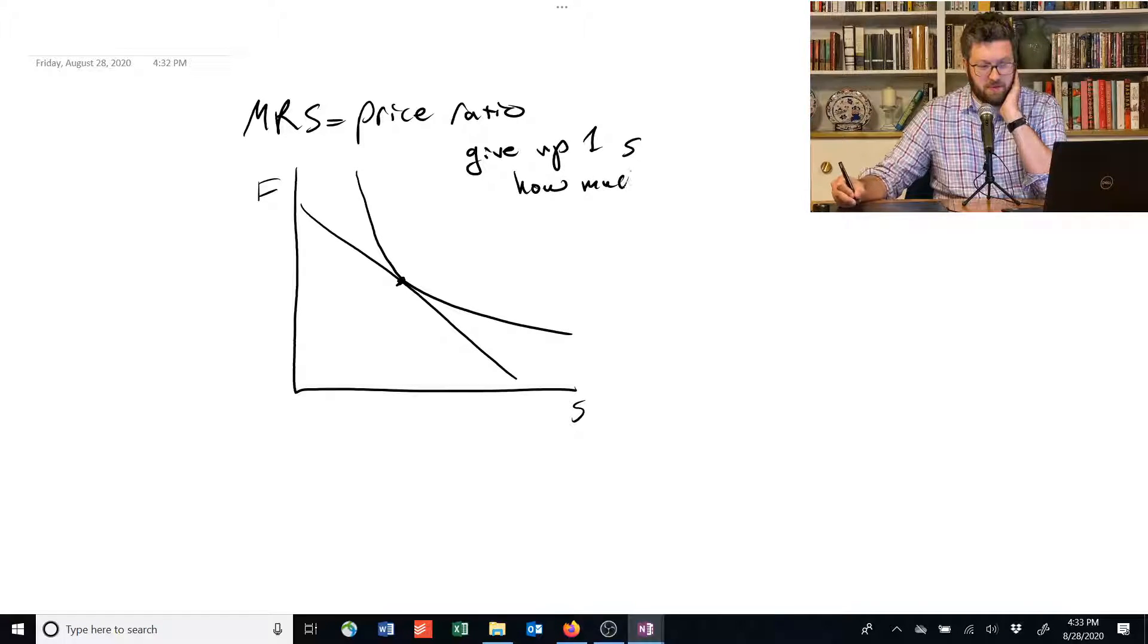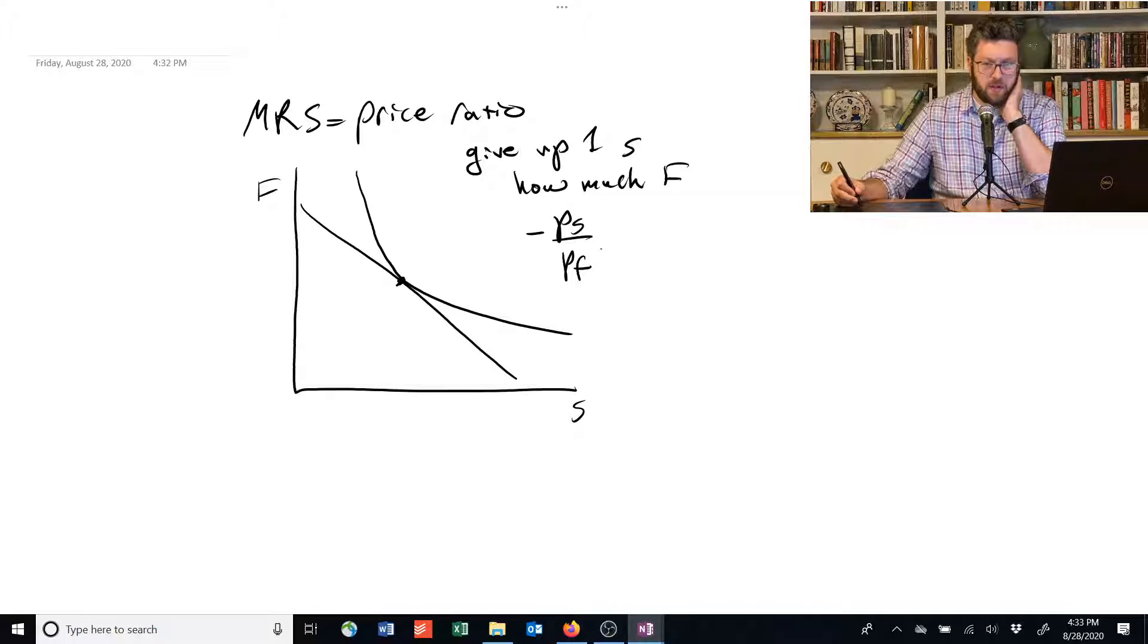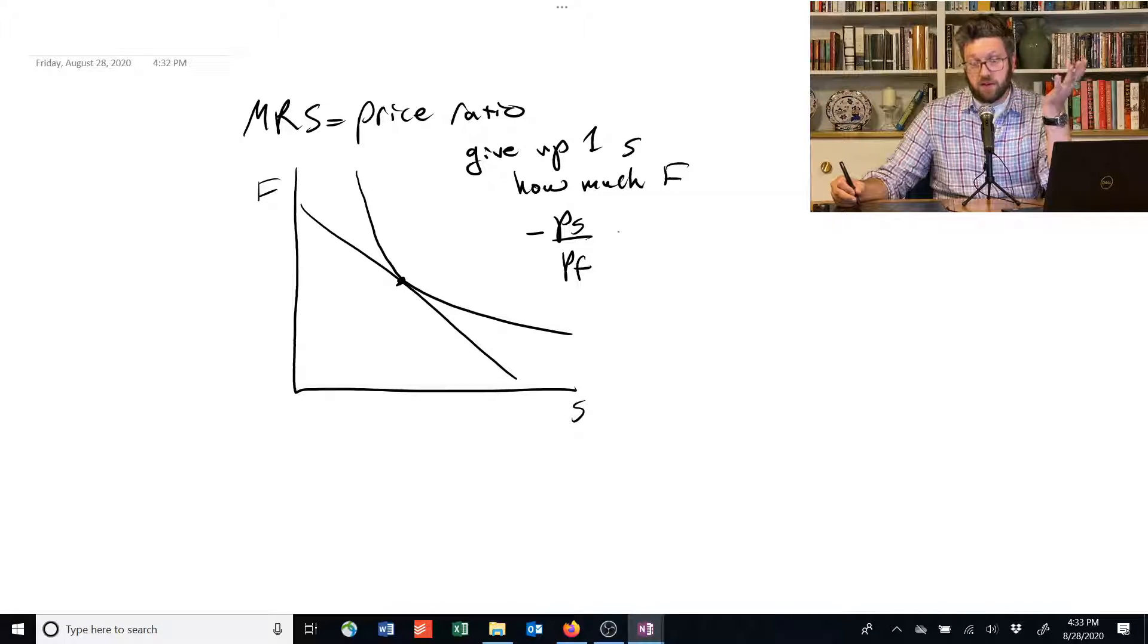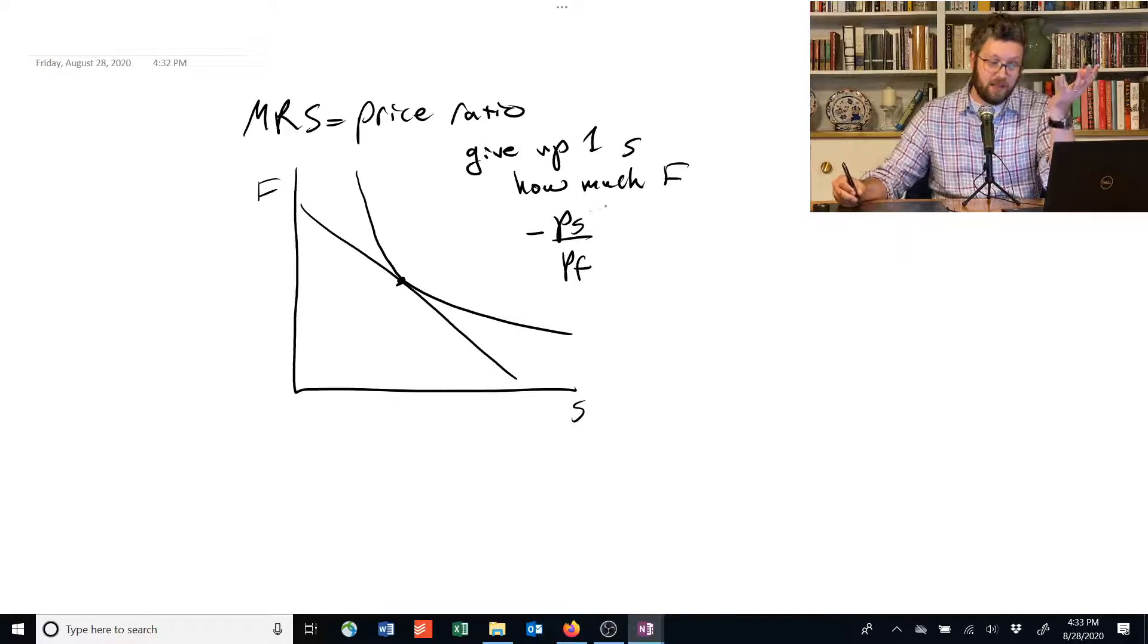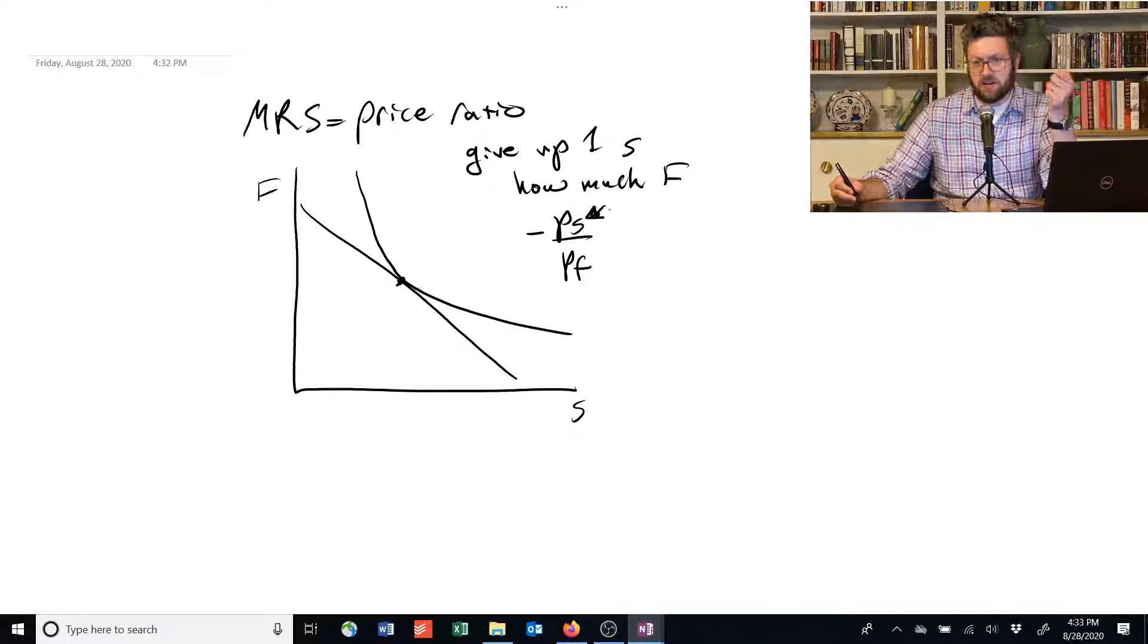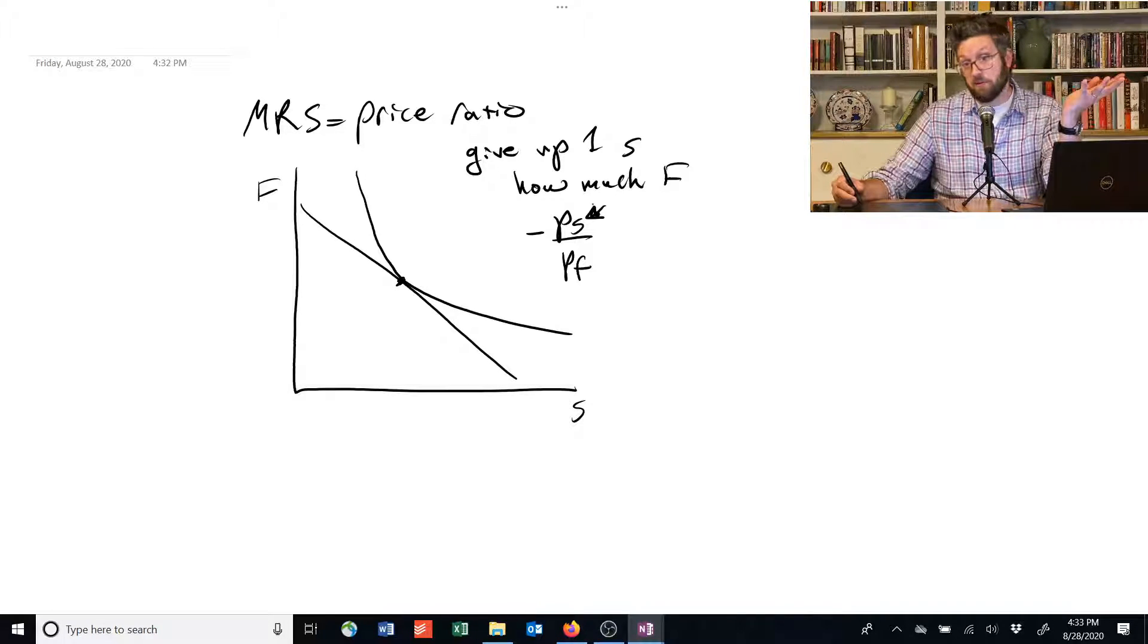And you can see that because the ratio is equal to PS over PF. So if we give up one unit of shelter, how much money do we get back? Well, we get back the price that we had, PS. So that's the extra money in your pocket. How much food can you buy with that? Well, divide it by the price of food, and that tells you how much food you can get.